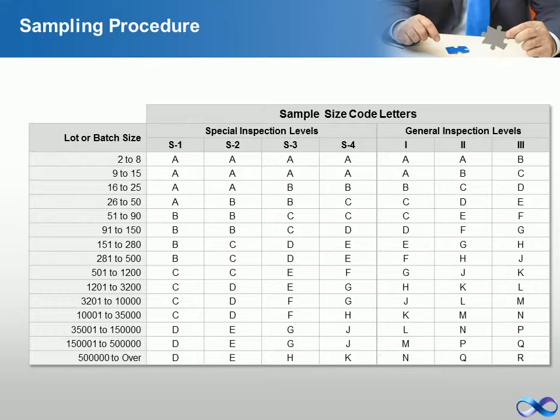Sampling plans are typically set up with reference to an acceptable quality level, or AQL. The AQL is the baseline requirement for the quality of the producer's product.